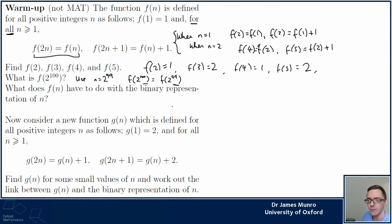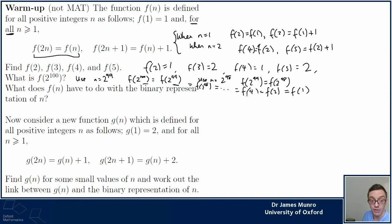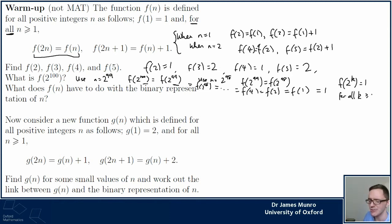Now there's a chance to do some pattern spotting and generalize: I got from 2^100 down to 2^99. Next I could use n equals 2^98, giving f(2^99) equals f(2^98). At this point you get excited and realize f(2^100) equals f(2^99) equals f(2^98) equals ... equals f(4) equals f(2) equals f(1). This dot-dot-dot is one of the reasons humans are really good at maths — we just blasted through about 100 lines of arithmetic very quickly. So all of these things equal 1.